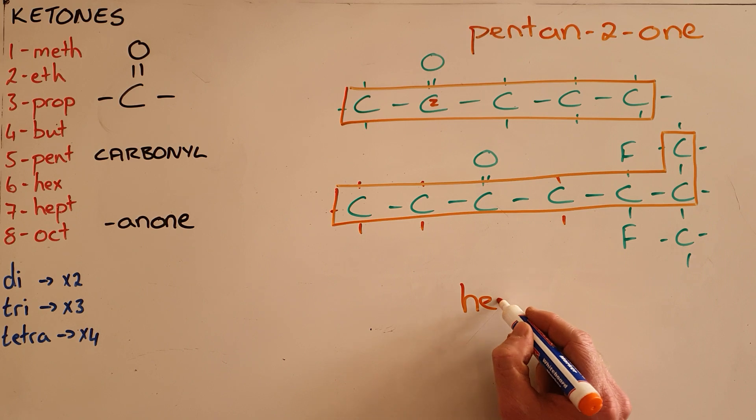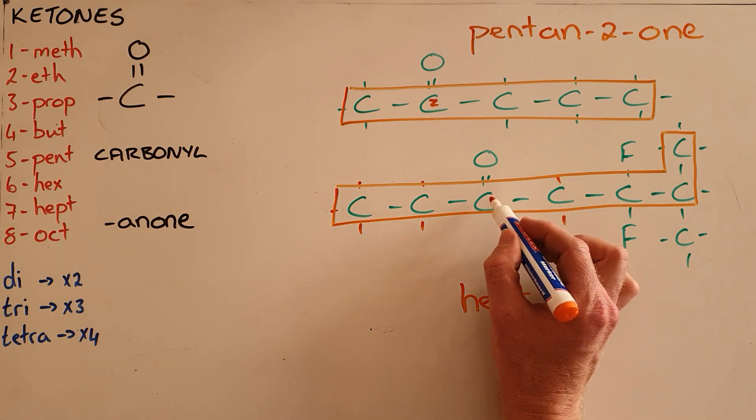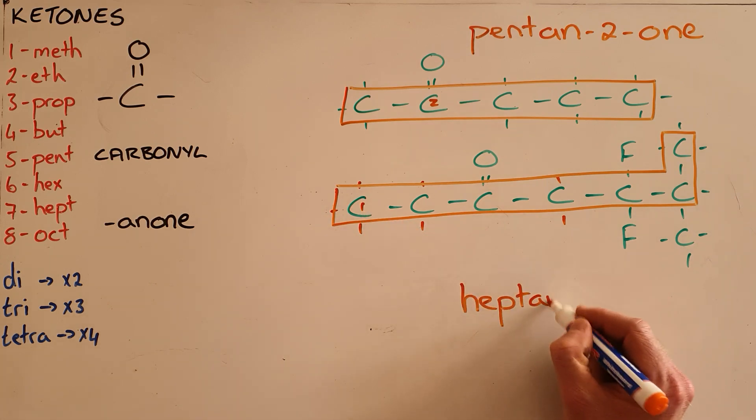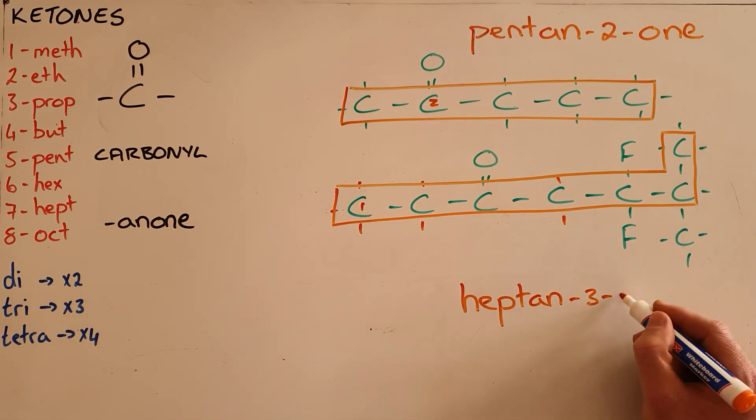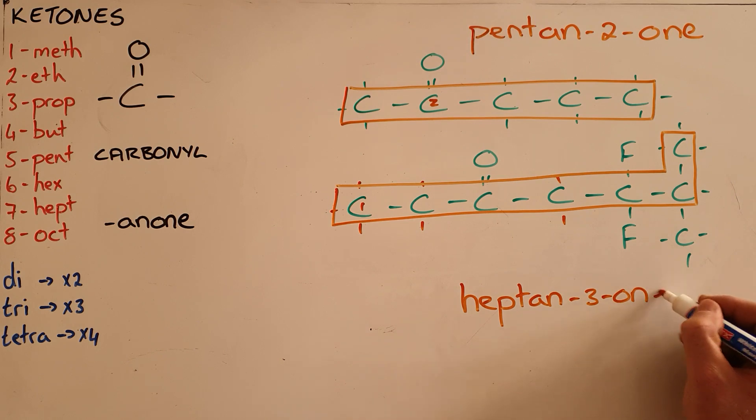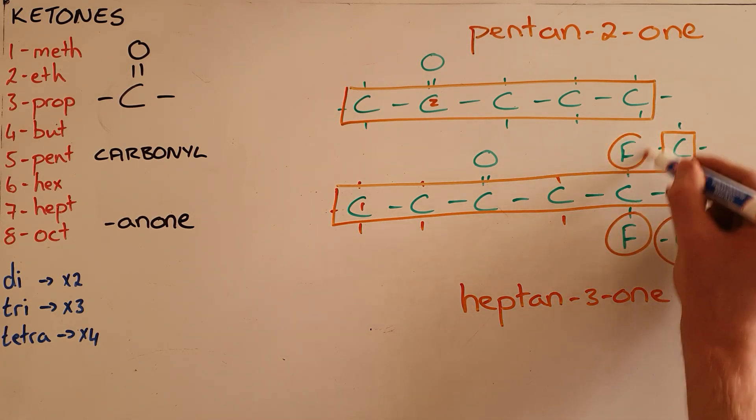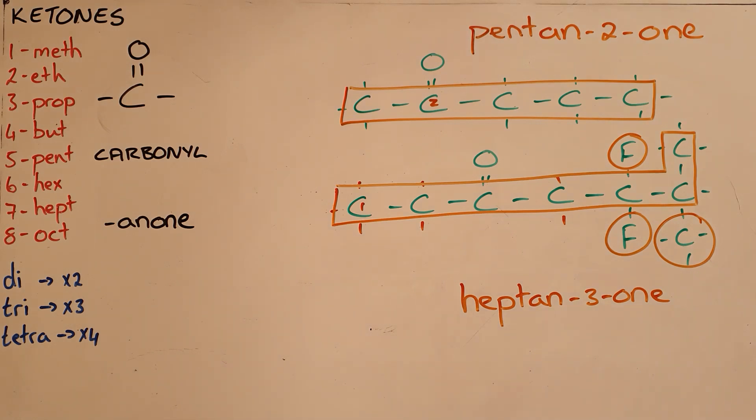It is important once again to number from the side that makes this the smallest number, so we call this heptan-3-one. We then identify one methyl branch and two fluoro branches.